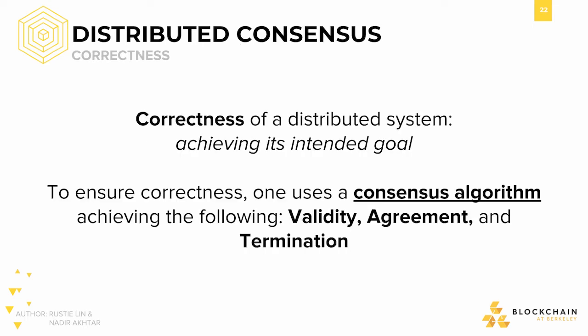We've spent quite a bit of time understanding safety and liveness, but how do we apply these ideas to distributed systems? How can we prove that our system achieves its goal? For any distributed system to be correct, it must come to some form of consensus on the correct answer — that's the whole point of a distributed system. The names given to these consensus-achieving procedures are known as consensus algorithms. Computer scientists have already recognized that there are three requirements of any correct consensus algorithm: validity, agreement, and termination.